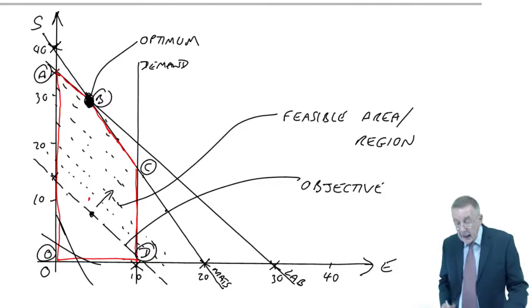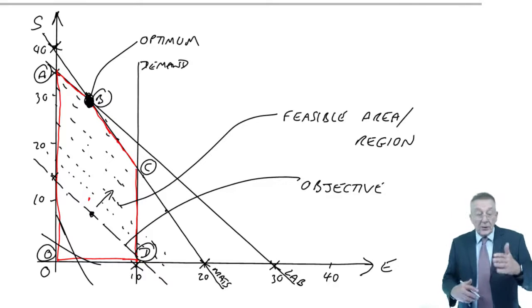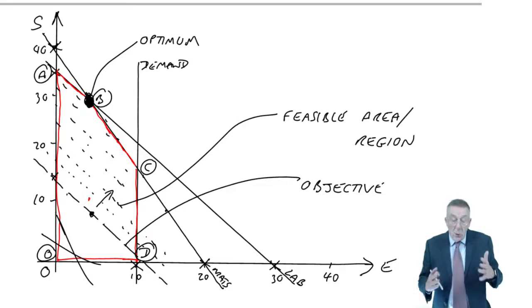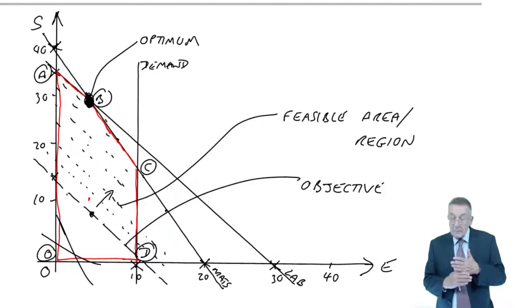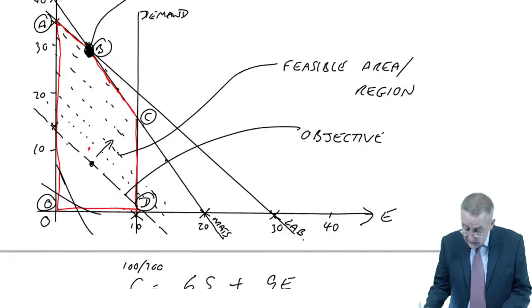However accurate the graph is, it looks as though S is about 30, E looks to be, I don't know, 4, whatever. But you mustn't read it off the graph. You are expected to be able to solve arithmetically.